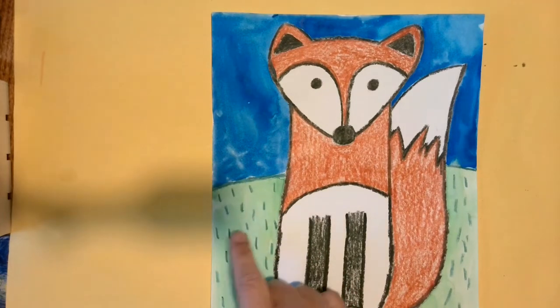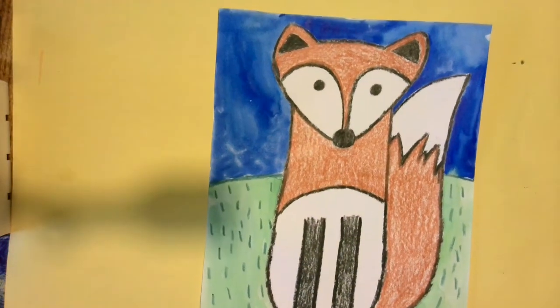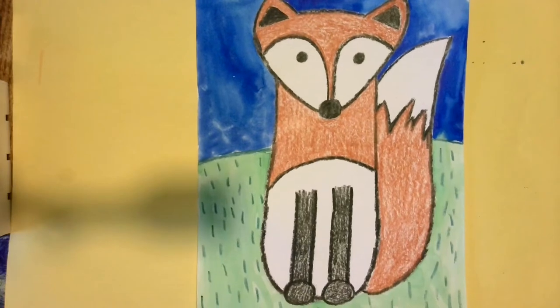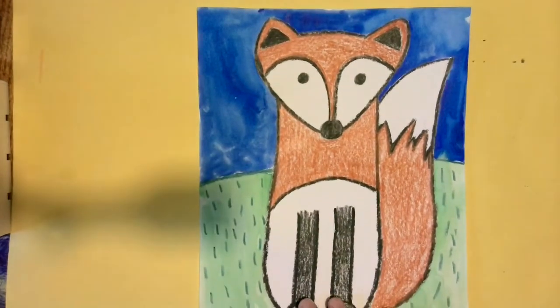I even added some crayon dash marks to add some texture in the grass, and I colored the whole fox with crayon too, and then I used watercolor in the background. You don't have to color it that way.